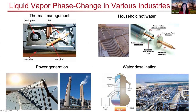Phase change heat transfer is important for various industries. In the thermal management community, phase change devices are already used in our daily lives, such as in a laptop computer. A heat pipe helps more effectively transfer the heat generated from your microprocessor to the fan so it can be blown out to the ambient. Another example is in hot water systems, where you take advantage of solar energy to heat up a heat pipe and transfer that heat to a household hot water system.